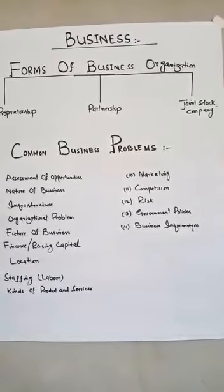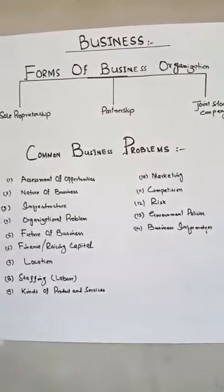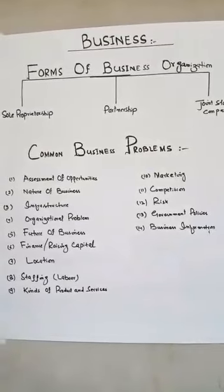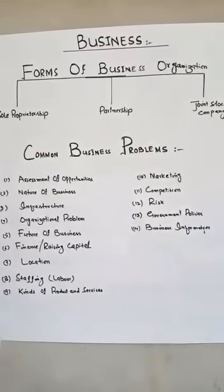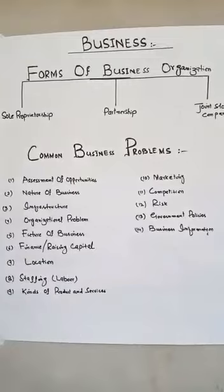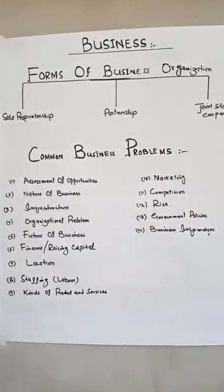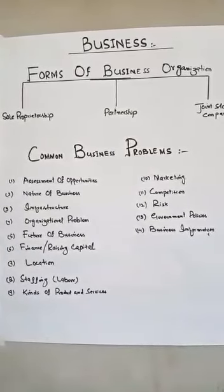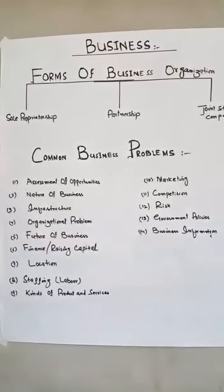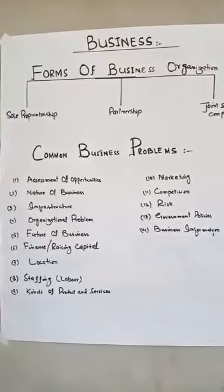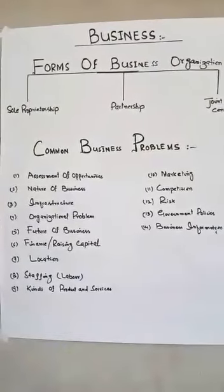Number fourteen is business information. A businessman must know the demand and supply of products and services present in the market. So here is all the information about business, forms of business organization, and common problems for starting a new business. I hope you understood the lecture.